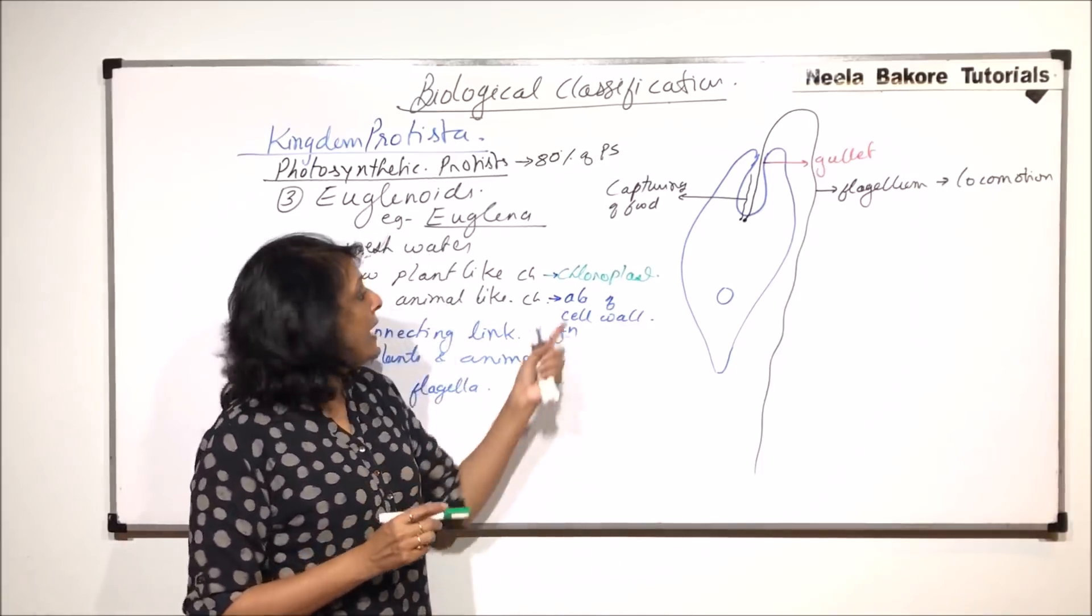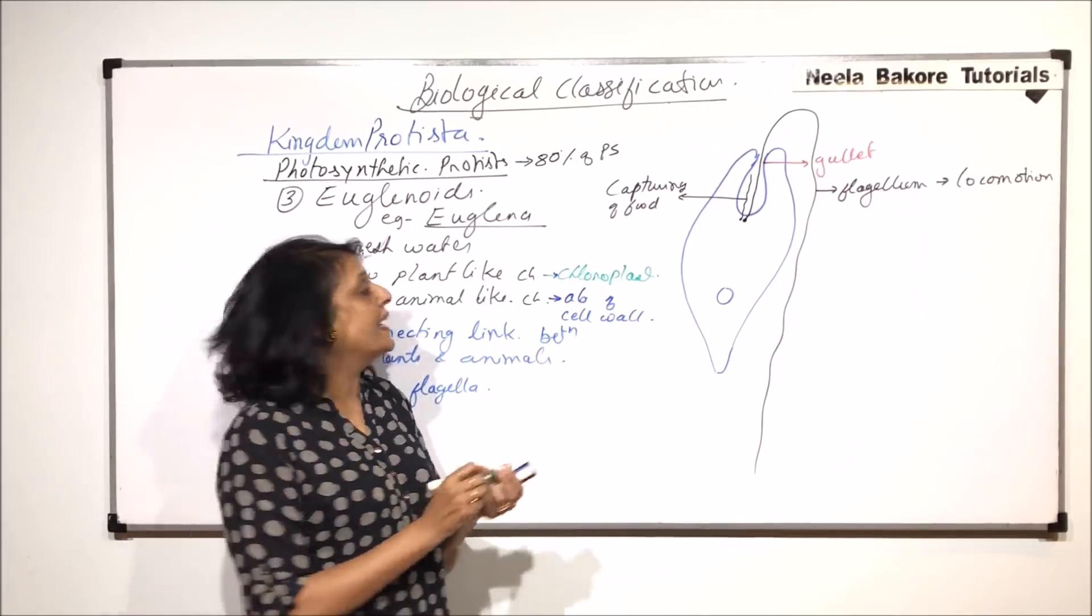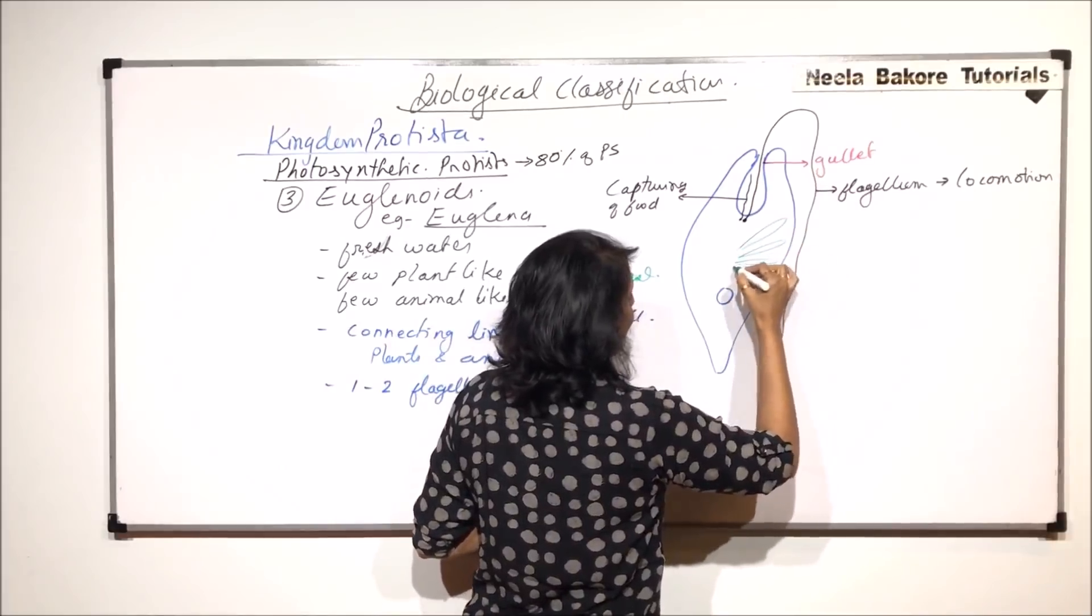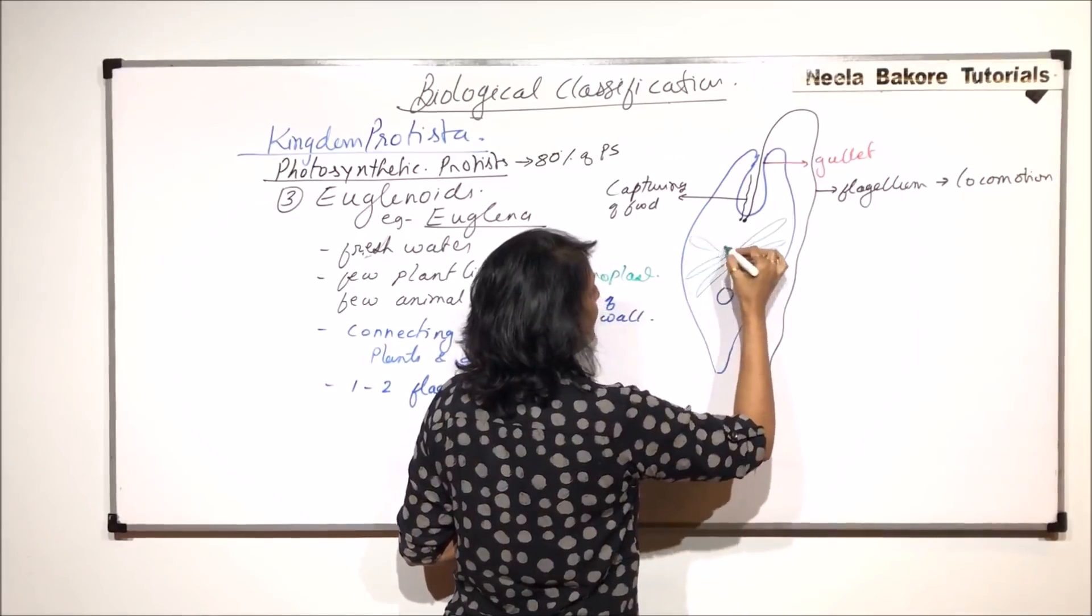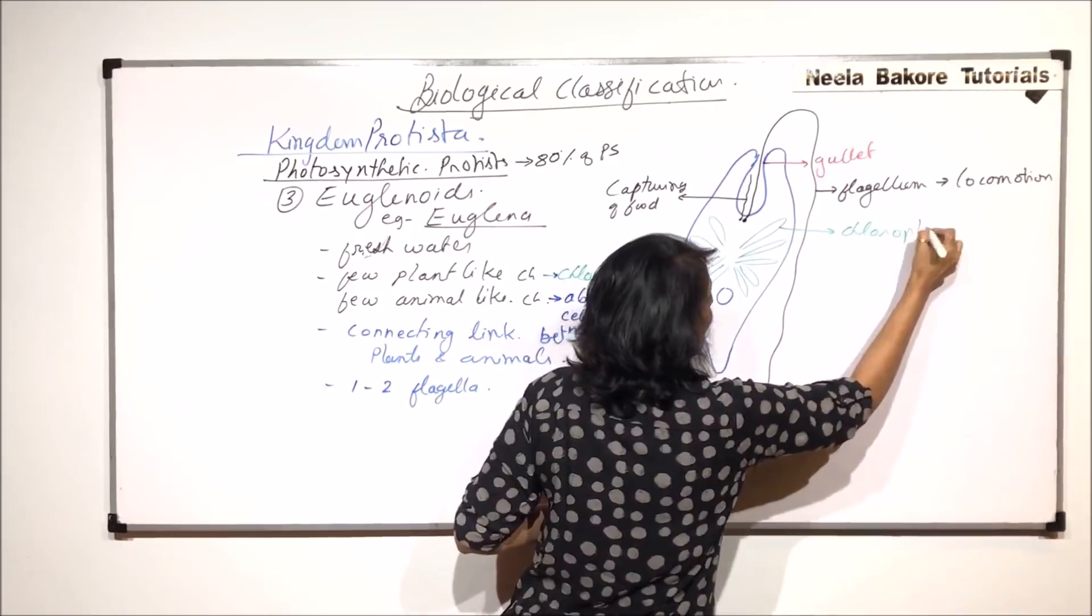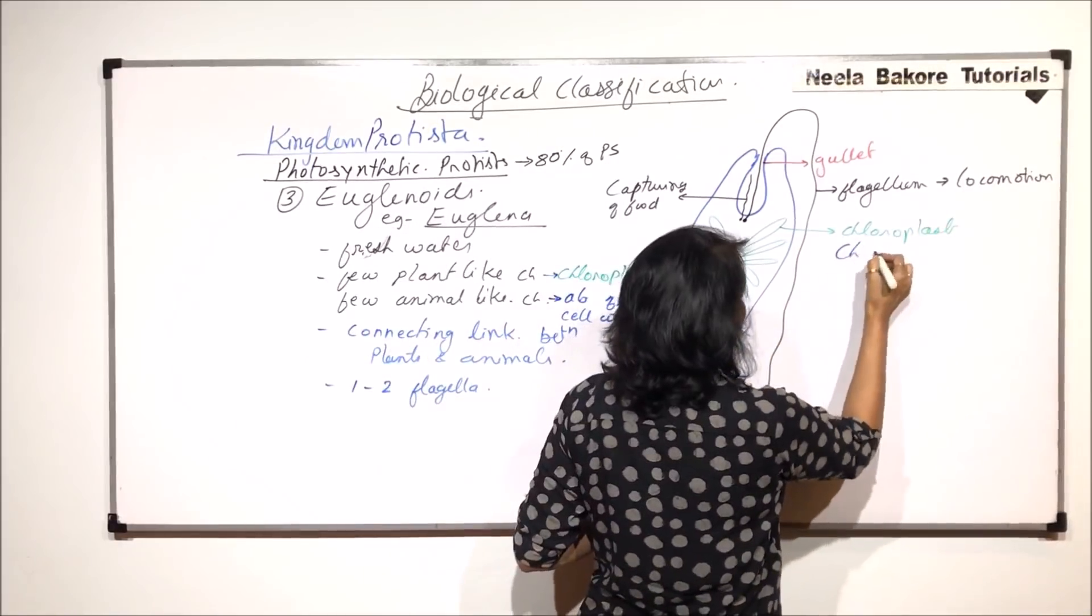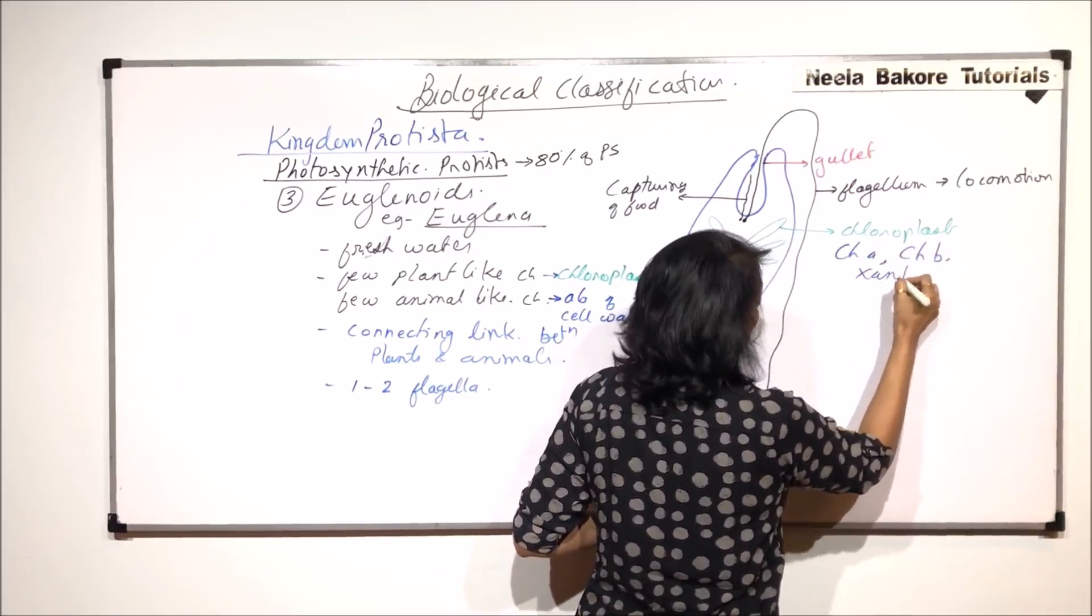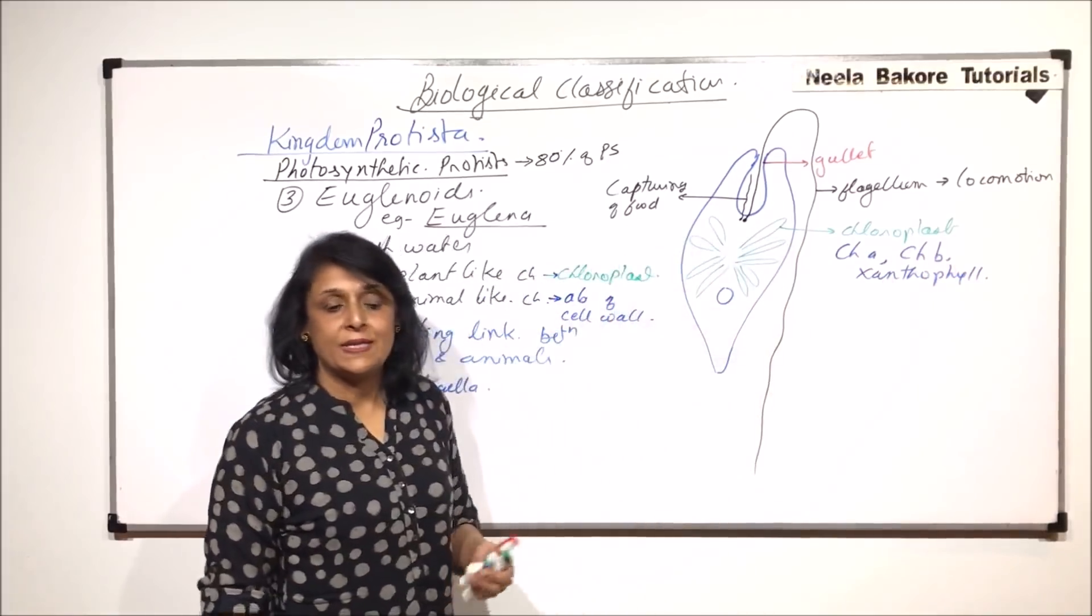As we said that chloroplasts are present, these chloroplasts are elongated and radiating. The chloroplasts are arranged in this radiating manner. These structures are chloroplasts, and chloroplasts have chlorophyll A, chlorophyll B, and xanthophyll. These are the main pigments which are present.